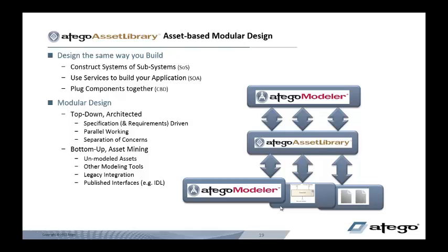The Otago Vantage solution, using Otago Asset Library, lets you design the same way that you build. So you can construct systems of systems, or for software, use service-oriented architectures or component-based development. Our solution allows you to work top-down for architected modular design, or bottom-up for asset mining and reuse. Let's start by looking at the bottom-up approach.